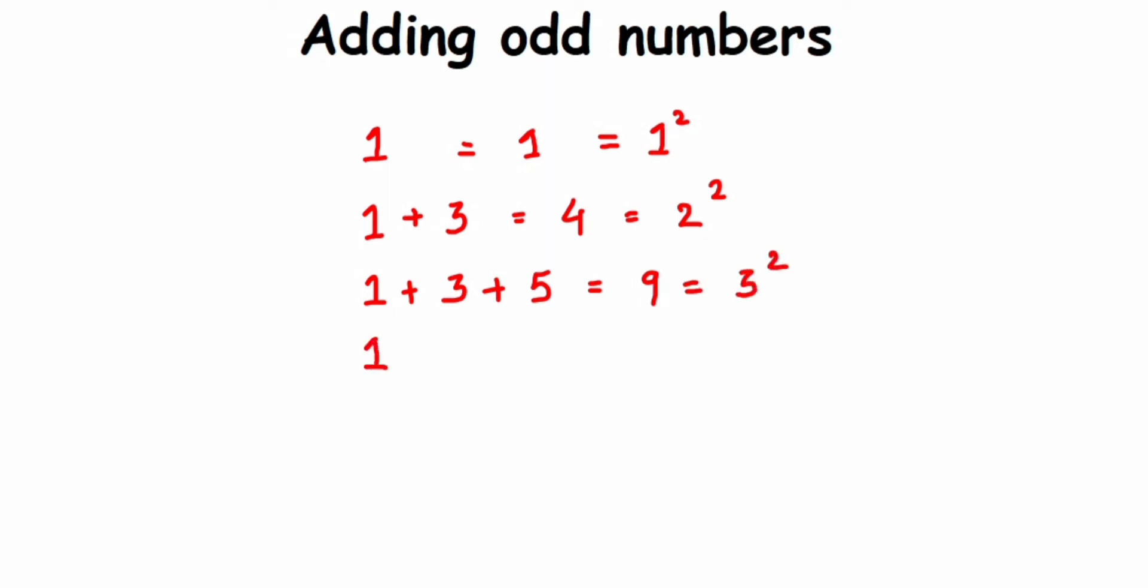Let us see one more pattern. 1 plus 3 plus 5 plus the next odd number is 7 is equal to, if I add all of this I'll get 16, and 16 is equal to 4 squared.